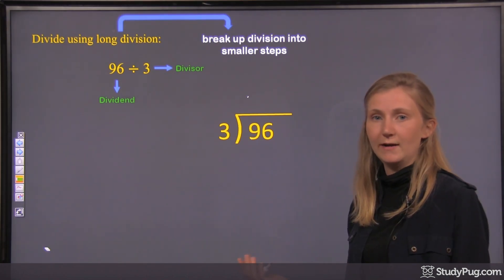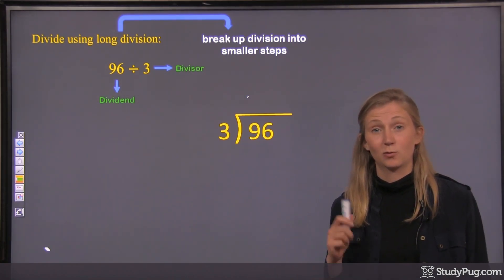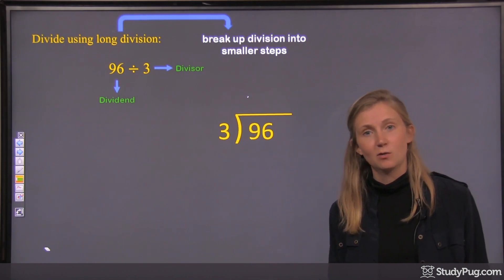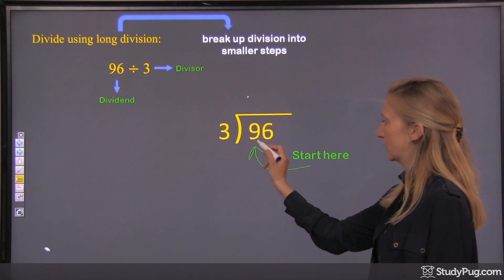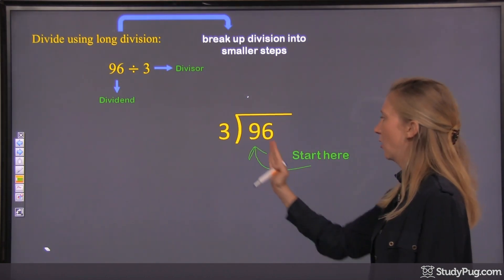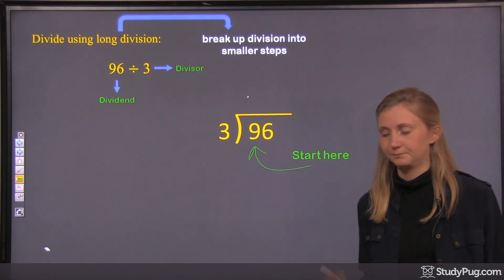With the ones, right? The smallest place value. Always start on the right-hand side at the smallest place value for the ones. In division, we're actually going to start at the biggest place value. So in this one, we would start here, all the way on the left-hand side of the number. That's where we're going to start our division.